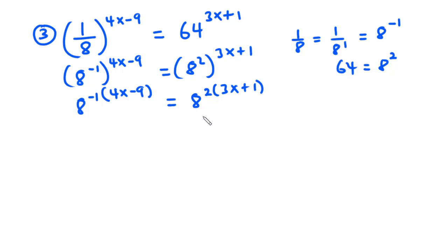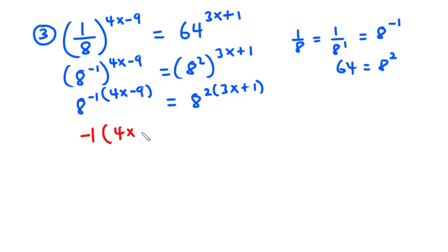So because we have common bases, we are going to compare the exponents. That is negative 1 into bracket 4x minus 9 equals 2 into bracket 3x plus 1.